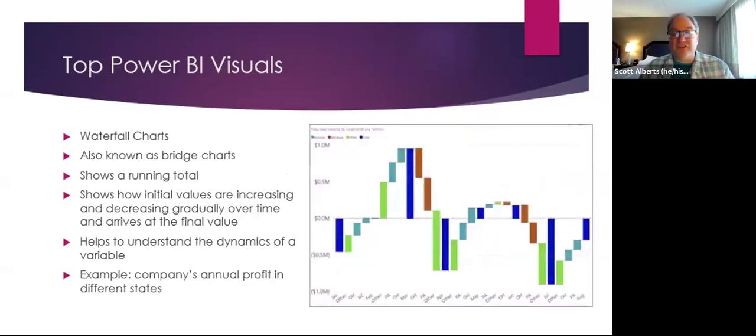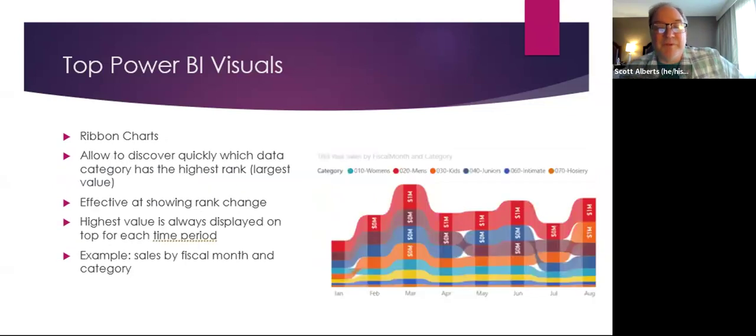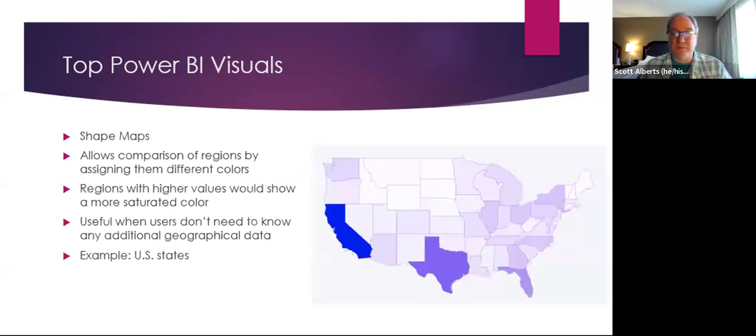Waterfall charts are often used for stock prices, interest rates, those kind of things where you can see the dynamic changes to a variable. Or you could look at how different states correlate, which states you're having a big market share in. Ribbon charts do a similar thing, but they look at ranks or changes. Again, we in statistics, we don't really care for these, but certainly there are settings where a ribbon chart is a great tool.